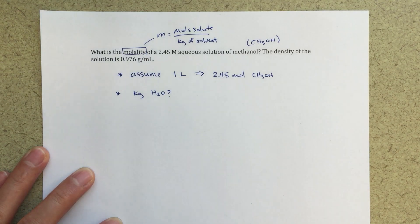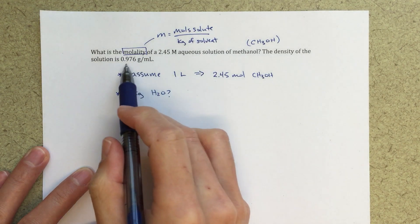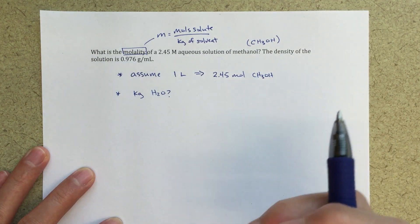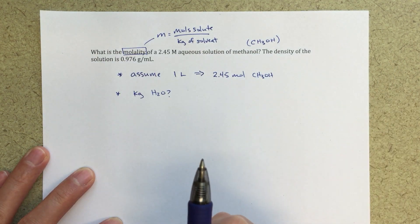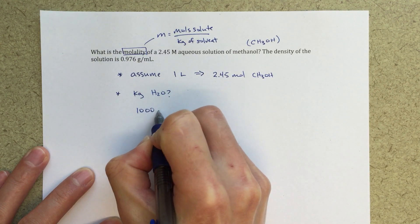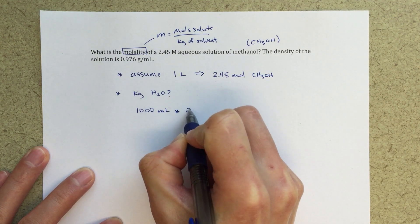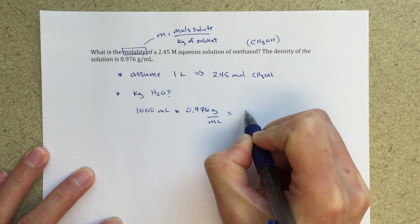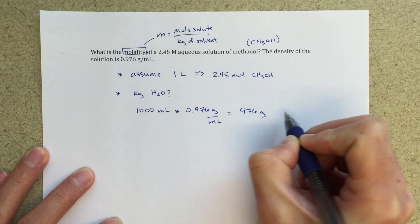Kilograms of water equals question mark. I can use this density to find the mass of the entire solution. That's going to be the mass of the water plus the mass of the methanol though. So let's go ahead and do that. If I've got my one liter, that's 1,000 milliliters. If I multiply that by 0.976 grams per milliliter, that gives me 976 grams.